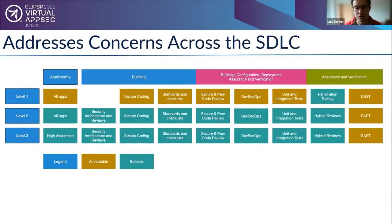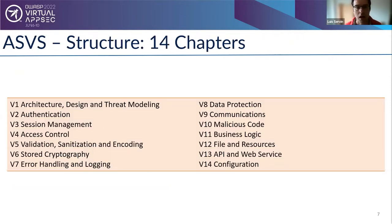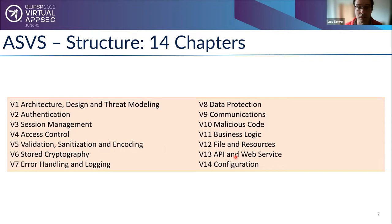ASVS allows you across its different levels to touch on the whole DevOps cycle — configuring, deployment, assurance, and verification. It has 14 chapters covering architecture, authentication, session management, access control, validation, sanitization, and encoding. My personal top chapters for most developers are number five, eight, twelve, and thirteen — these are the things developers deal with practically all the time.